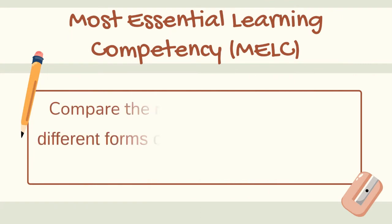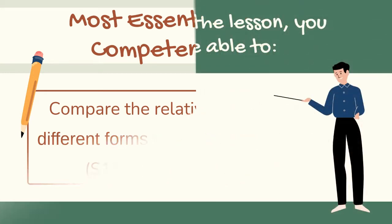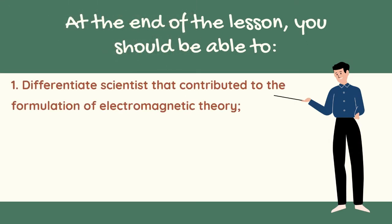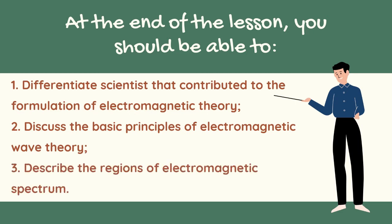Our topic is based on the most essential learning competency, MELC Week 1 and 2. At the end of the lesson, you should be able to: first, differentiate scientists that contributed to the formulation of electromagnetic theory; second, discuss the basic principles of electromagnetic wave theory; third, describe the regions of the electromagnetic spectrum.